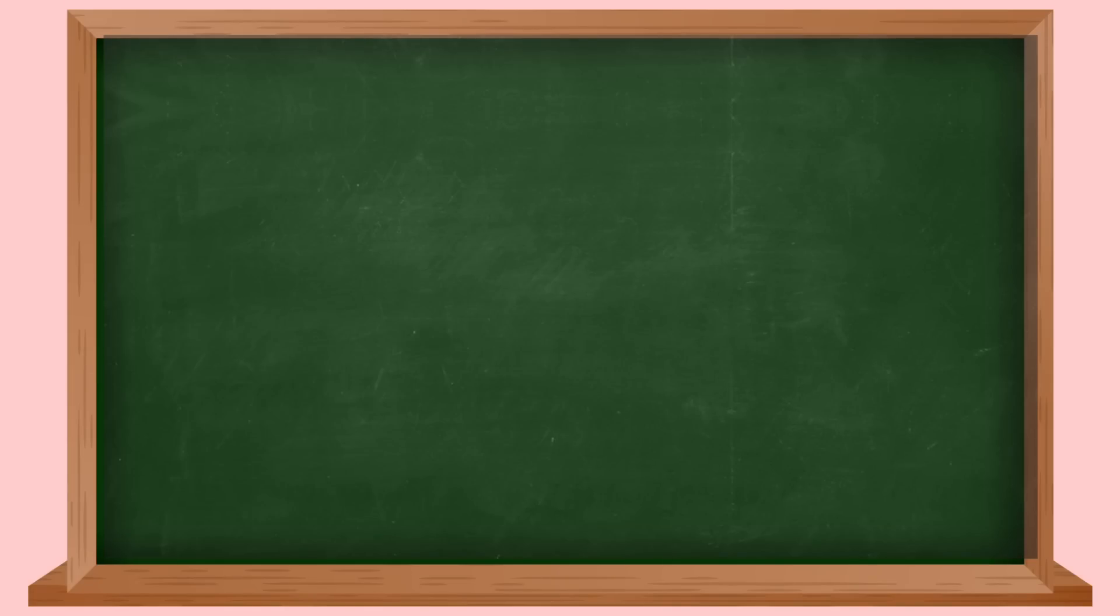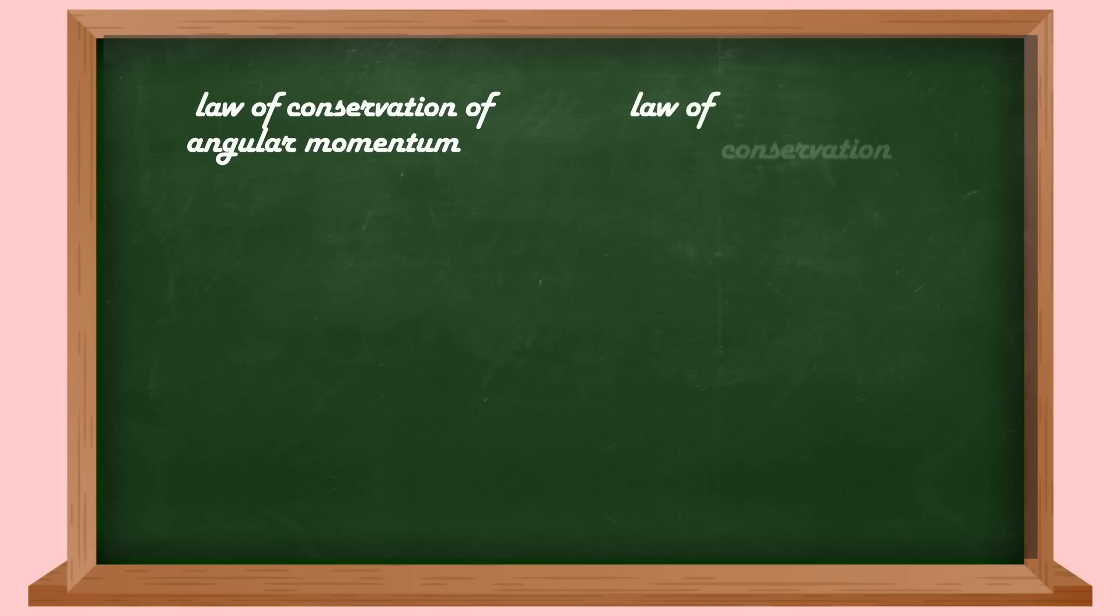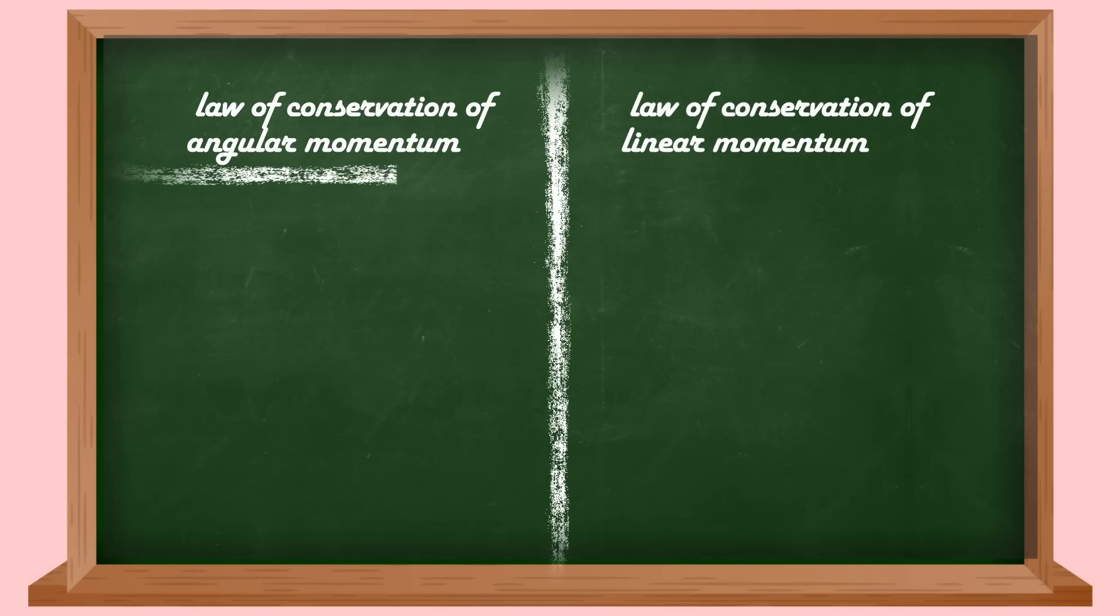And what I've just shown you is something called the law of conservation of angular momentum. This, at least, is a highly oversimplified version—you physics people don't bombard me in the comments saying this isn't precise enough, okay? The law of conservation of angular momentum is similar to the law of conservation of linear momentum. The only difference is: this is for rotation and this is for linear motion.